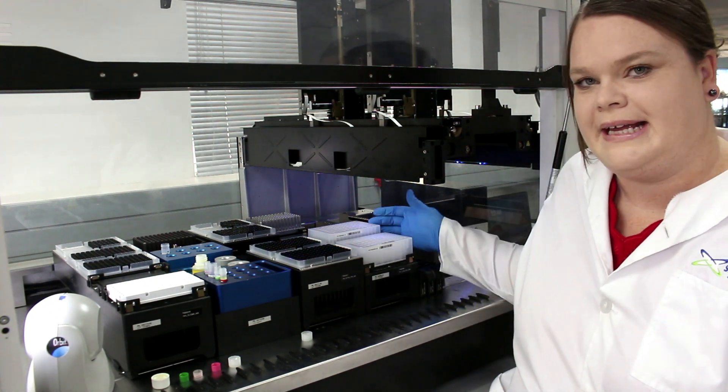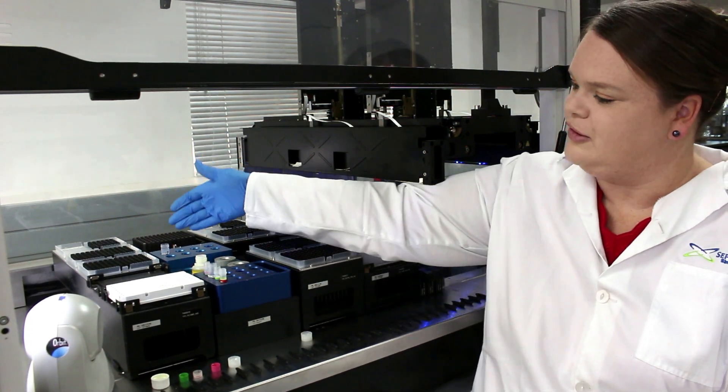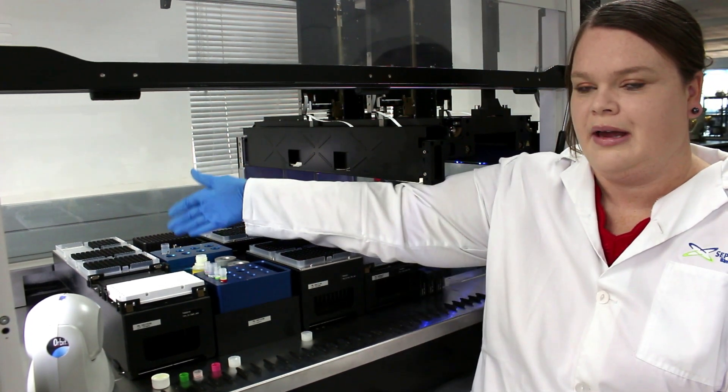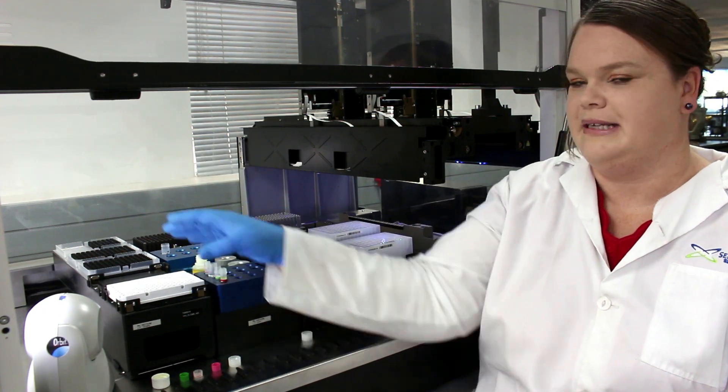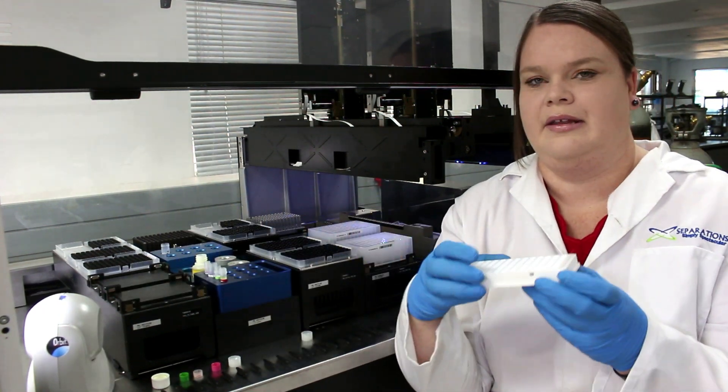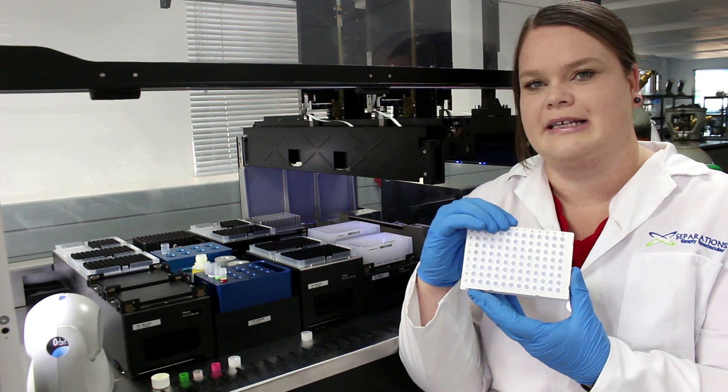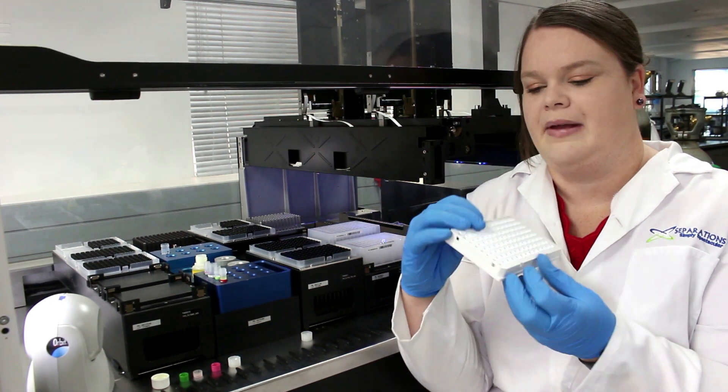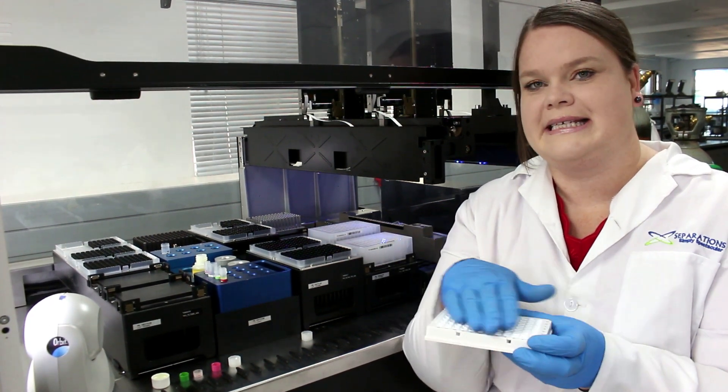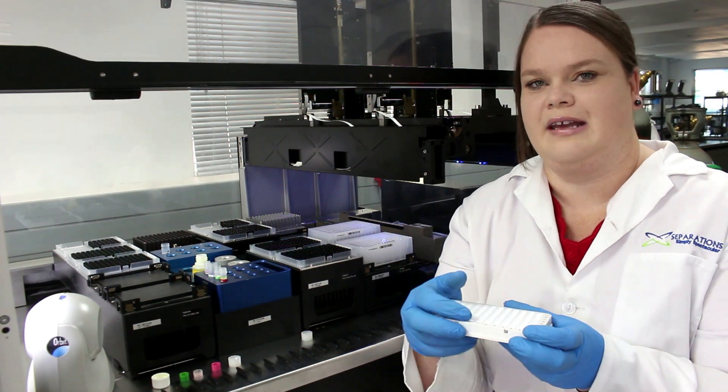The DNA extraction takes place in this deep well plate, and the PCR mix is added to the mix tube and then aliquoted onto the PCR plate. The PCR plate is also 96 wells and at the end of the run gets sealed and put onto the CFX Opus.